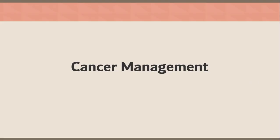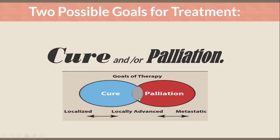Cancer Management. There are two possible goals for the treatment of cancer: cure and/or palliation. When the tumor is localized, the physician will choose the cure pathway. If the cancer is metastatic, palliation is the best-fitting solution. For locally advanced or stage 3 cancer, it is in between cure and palliation, depending on the healthcare team's decision and treatment plan.